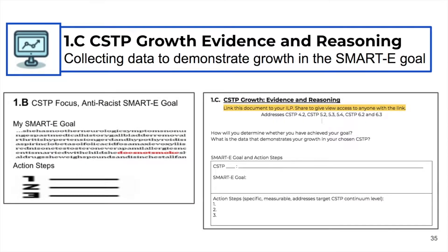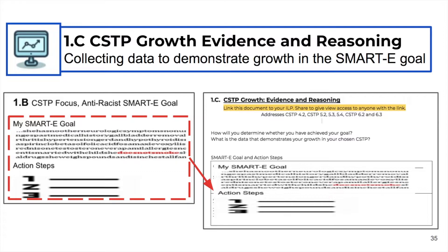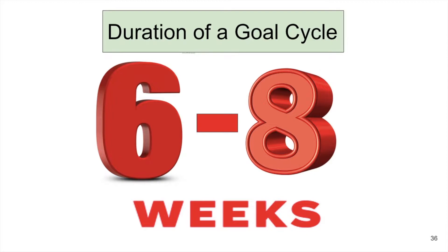Start 1c by copying and pasting the SMART-E goal and action steps from 1b, having the goal at the top of 1c. This makes it easy to stay focused on the goal and more specifically on the action steps as the teacher begins the work to reach the goal. A full cycle is about six to eight weeks.